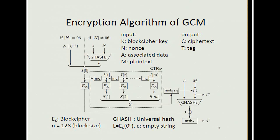This is an overview of the encryption algorithm of GCM. It takes a block cipher key K, a nonce N, associated data A, and a plaintext M as inputs, and outputs a ciphertext C and a tag. It uses a block cipher E_K whose block size is 128 bits.